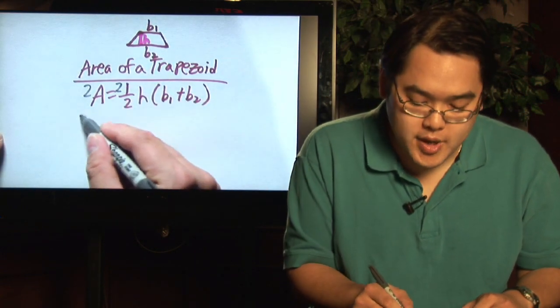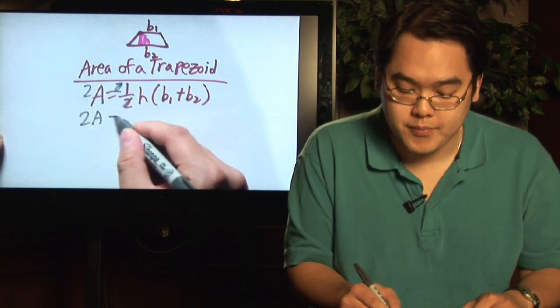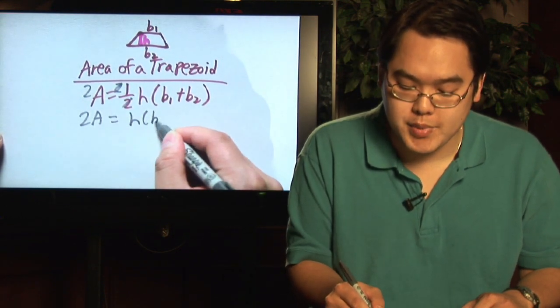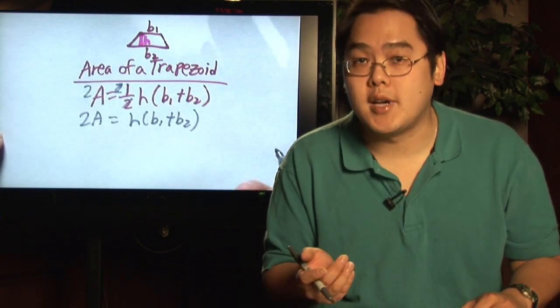So at this point the left side is 2A. The 2's here cancel, so you're left with height times B1 plus B2. And then to get height completely by itself, you just divide both sides by the baggage, if you will, the parentheses B1 plus B2.